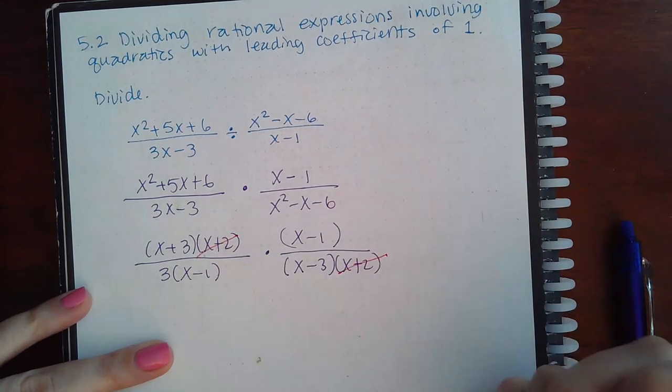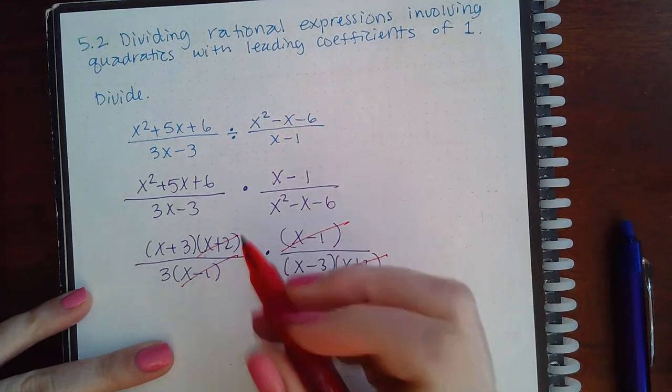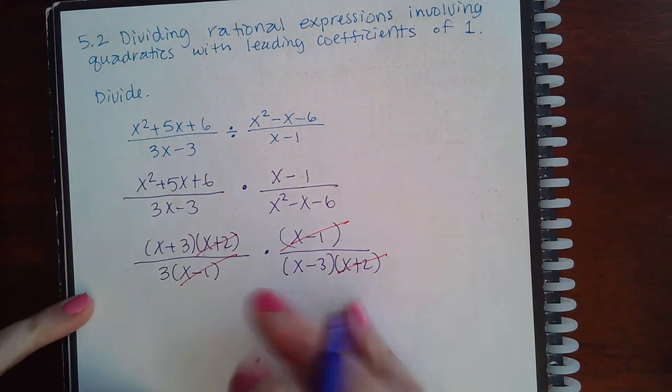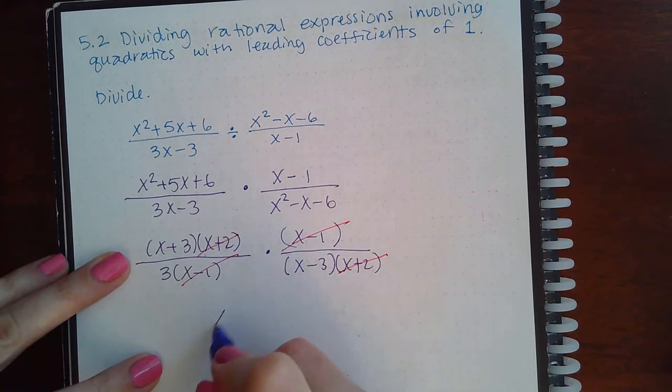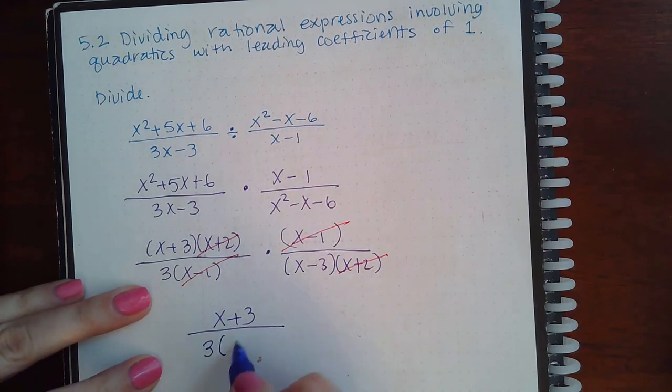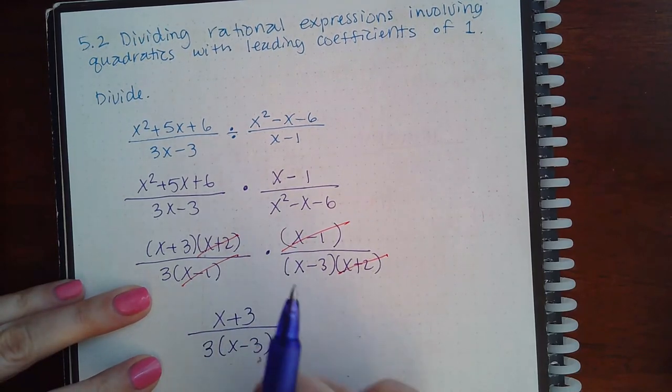But I do have a common factor here. I have a common factor there. And that's really the only thing that can be reduced. So what am I left with? I'm left with x plus 3 in the numerator and 3 times x minus 3 in the denominator.